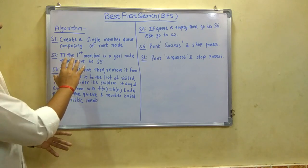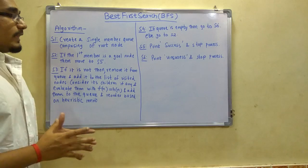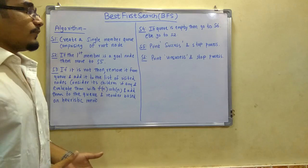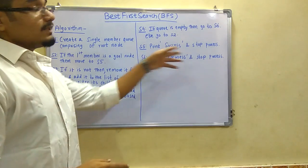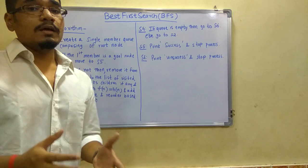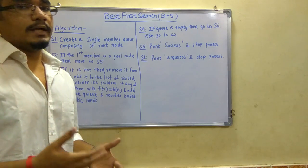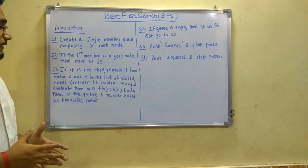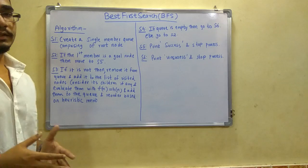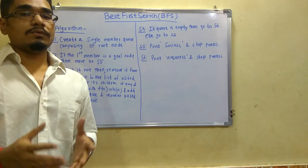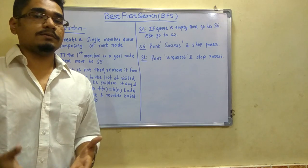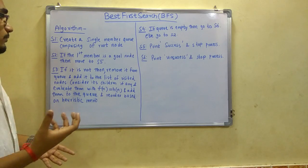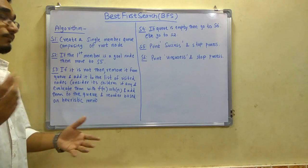If the first member of the queue is the goal node, then we move to step 5, which is print success and stop the process. If that is not the case, we will remove it from the queue and add it to the list of visited nodes.